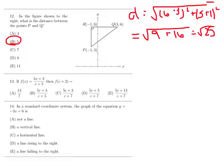13. f of c plus 2 means for f of x, you have 5x plus 3 over x plus 5. So now everywhere you see an x, you're going to put in a c plus 2. So f of c plus 2, I'm just going to scribble that out, equals 5 times c plus 2 plus 3 over c plus 2.